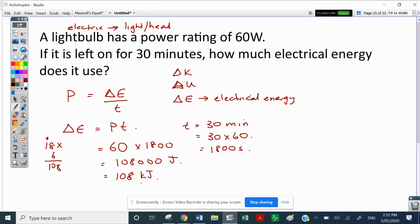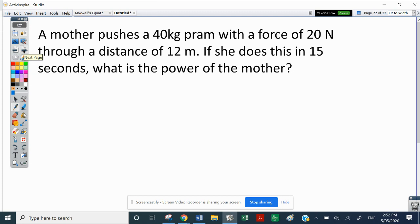The last calculation type is what are we doing when we're using a different type of form of work. Our last form of work is where work is Fs, a force and something being moved through a distance. So our change of energy here, in this case, we could be using a force and displacement. So let's read our question. A mother pushes a 40 kilogram pram with a force of 20 newtons through a distance of 12 meters. And this is done in 15 seconds. What is the power?